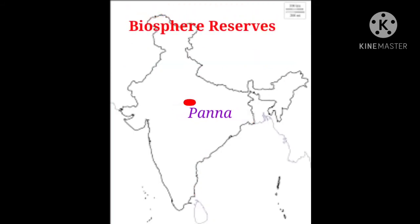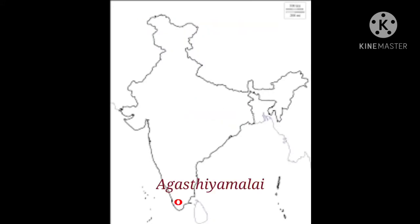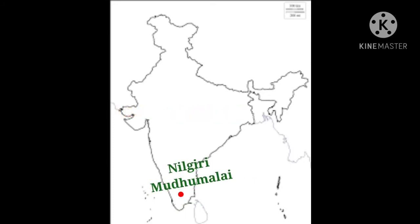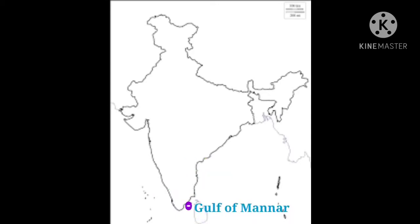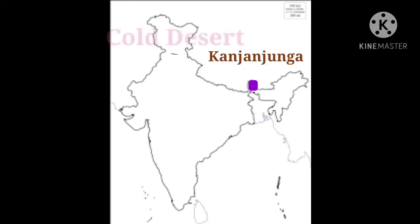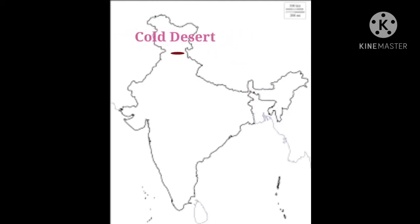Now biosphere reserves: Banna, Agasthia Malai, Rann of Kutch, Nilgiri Mudumalai, Gulf of Mannar, Sundarbans, Manas, Kanchenjunga, and Cold Desert.